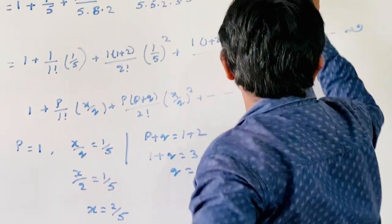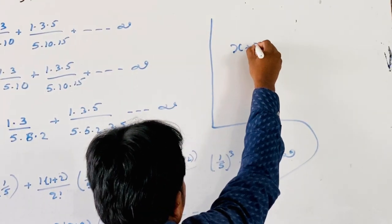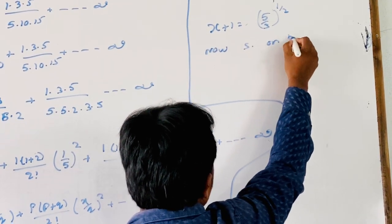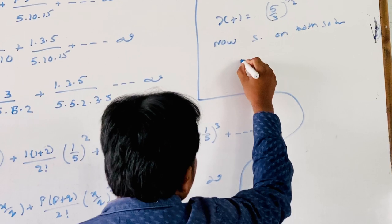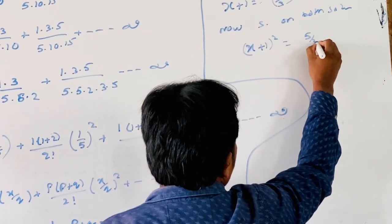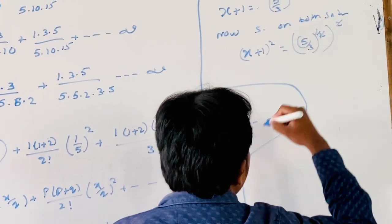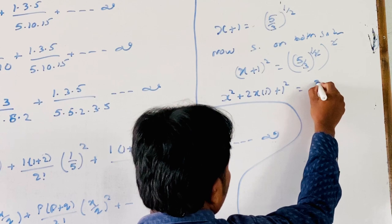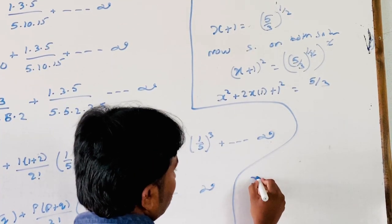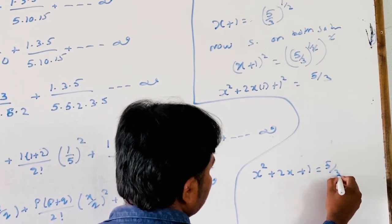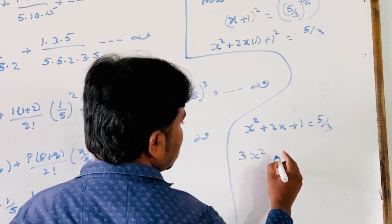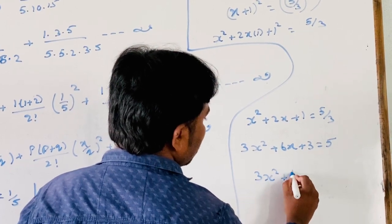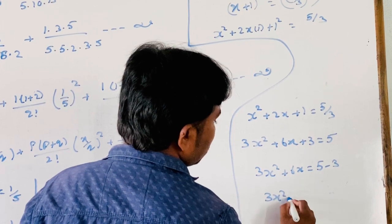So x + 1 = (5/3)^(1/2). Squaring both sides: (x + 1)² = 5/3. Applying the (A + B)² = A² + 2AB + B² formula: x² + 2x + 1 = 5/3. Multiplying through by 3: 3x² + 6x + 3 = 5, so 3x² + 6x = 5 − 3 = 2.